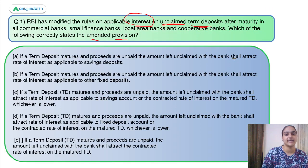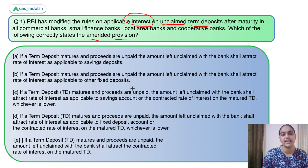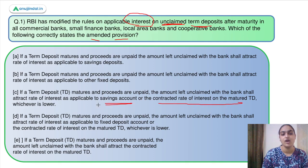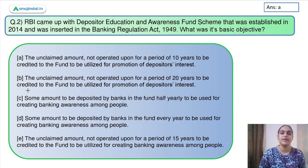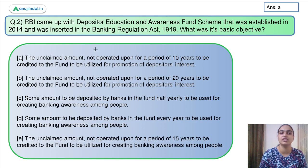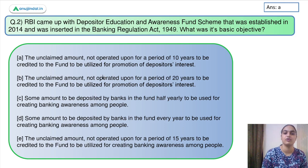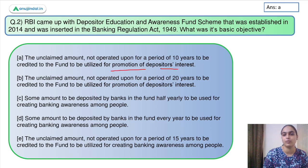Moving back to question number one: which of the following correctly states the amended provisions? The term deposit matures and the proceeds are unpaid. The amount left unclaimed shall attract the interest rate as applicable to savings rate or contracted rate, whichever is lower. So the answer is option C. Moving to question number 2, which is also related to this: RBI's Depositor Education and Awareness Fund was established in 2014 and inserted in the Banking Regulation Act. Its basic objective was that the unclaimed amount not operated for a period of 10 years be credited to the fund and utilized for promotion of depositors' interest. So option A is correct.